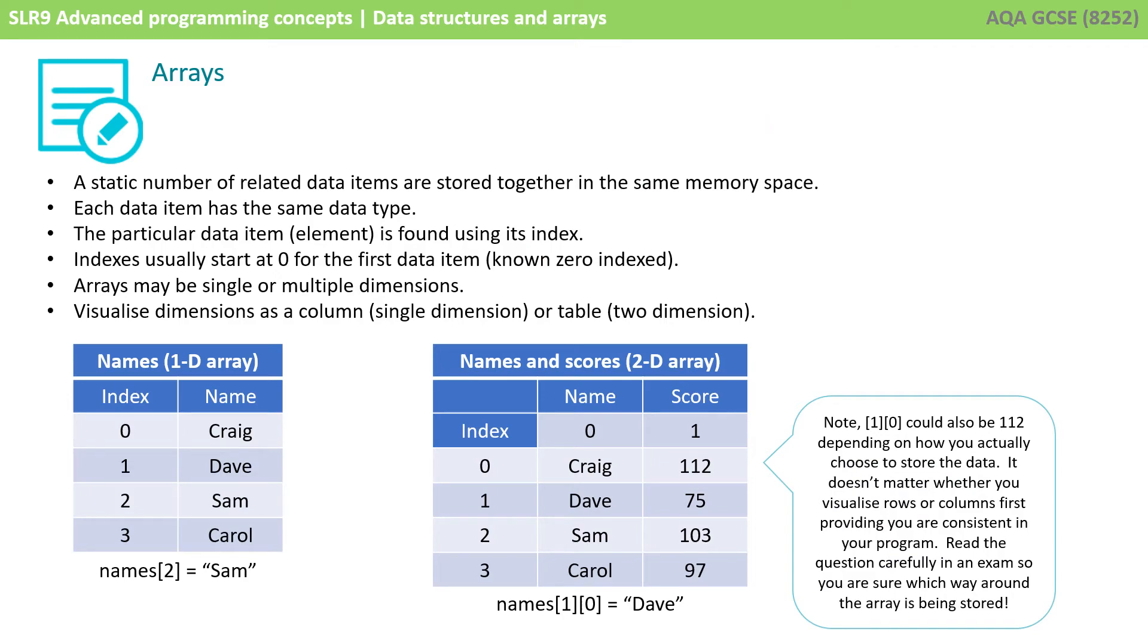So, let's just recap what we've covered. An array is a static number of related data items that are stored together in the same memory space. Each data item has to have the same data type. And the particular data item, the element, is found using the index for the array. Indexes usually start at 0 for the first data item, known as a 0 indexed array.